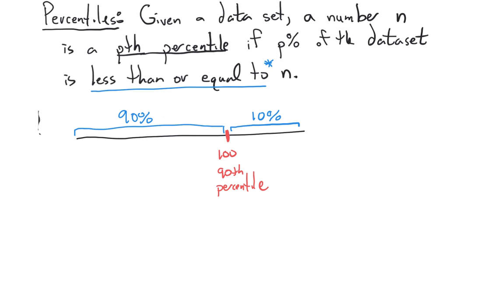A percentile just says: if a number is at a certain percentile, that percent of the data is less than that number. That's all a percentile is saying.